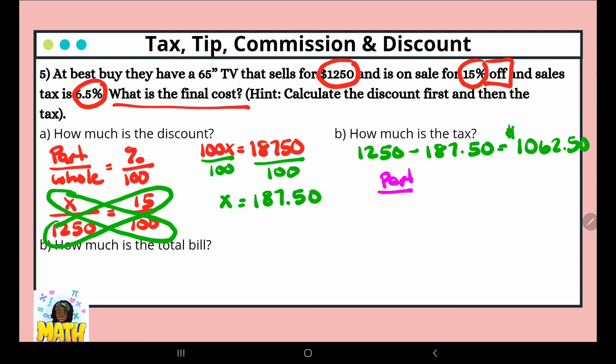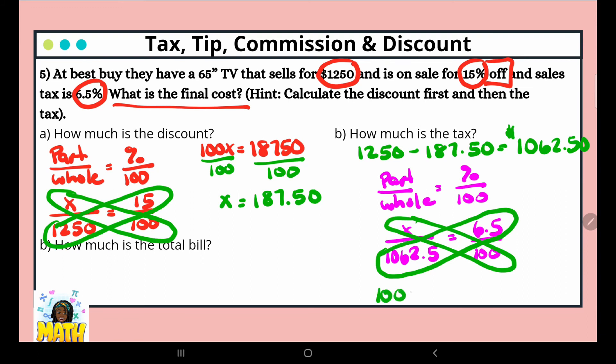Now we're going to use that amount to help us calculate our tax. So again, our percent proportion: part over whole equals percent over 100. We plug in our values. We don't know our part, our whole is $1,062.50, and that equals 6.5 over 100. We're going to cross multiply: x times 100, and then $1,062.50 times 6.5. So 100x equals $6,906.25, and we're dividing both sides by 100.